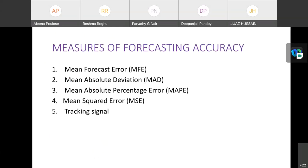And the measures of forecasting accuracy. There are several methods, measures of forecasting accuracy. First one is mean forecast error, mean absolute deviation, mean absolute percentage error, and mean squared error and tracking signal. These methods are used for checking the accuracy of forecasting. This is all about forecasting.